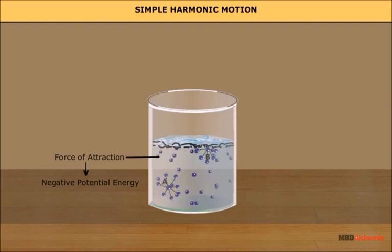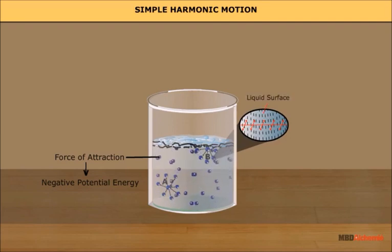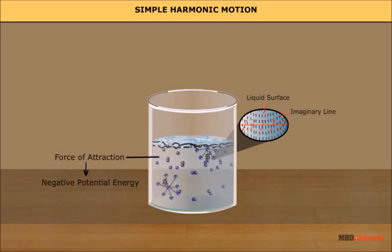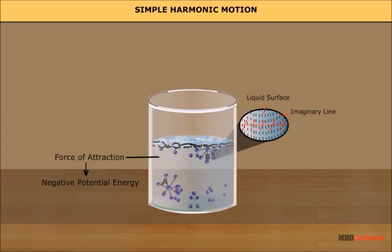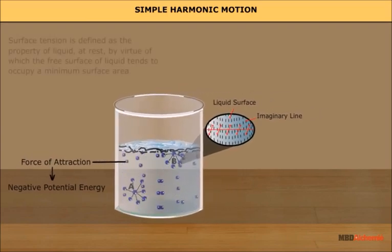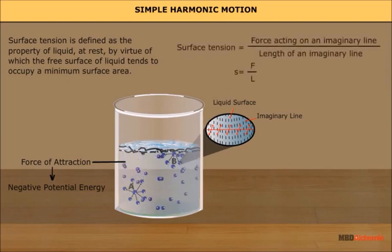A molecule B at the surface is surrounded by liquid molecules from its lower side only. Its negative potential energy is therefore less than that of a molecule fully inside. This means molecules at the surface have additional energy compared to those inside. This additional energy, spread uniformly over the surface, tends to give the liquid a minimum surface area, which is how surface tension is defined.